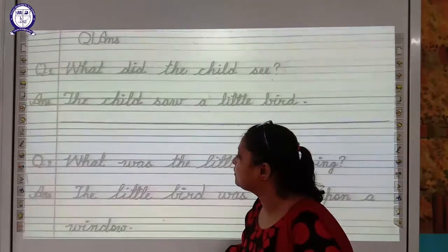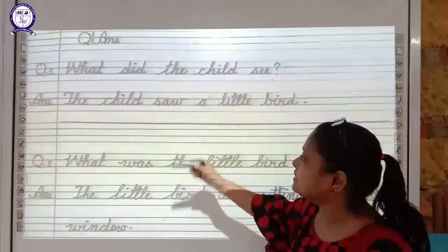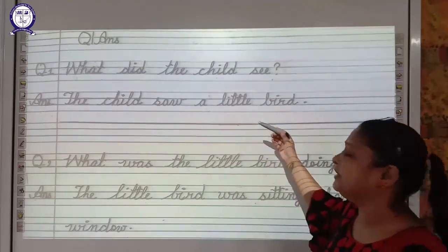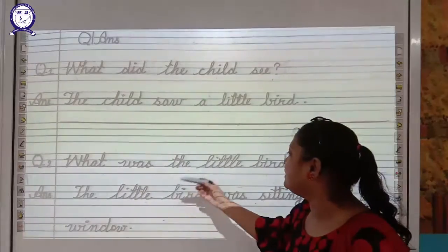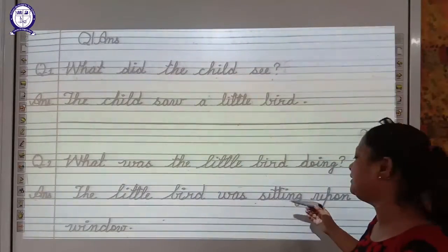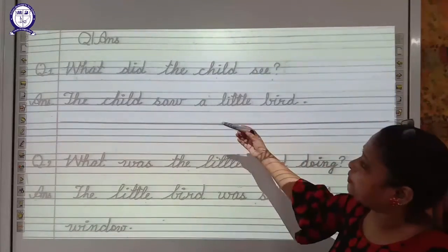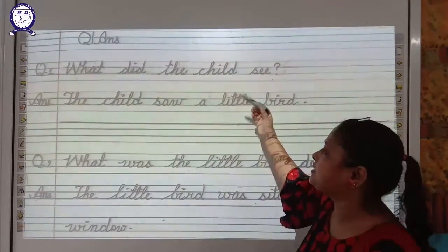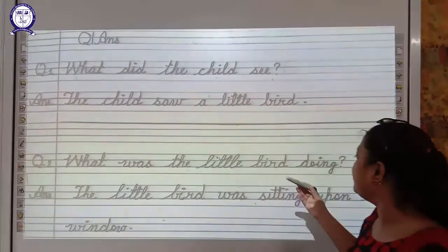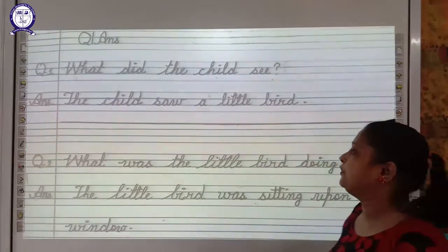Now it's time to do question and answer. What did the child see? The child saw a little bird. What was the little bird doing? The little bird was sitting upon a window.